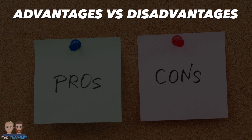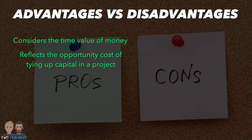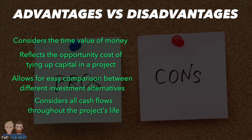The net present value method offers several advantages. Firstly, it considers the time value of money, providing a more accurate assessment of an investment's profitability and reflecting the opportunity cost of tying up capital in a project. Secondly, NPV allows for easy comparison between different investment alternatives by providing a single value reflecting the project's worth in today's terms. Additionally, it considers all cash flows throughout the project's life, and enables sensitivity analysis to assess the impact of changes in discount rates or cash flow projections on viability.